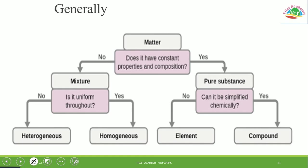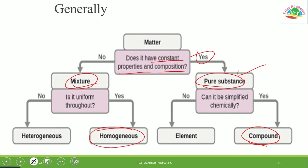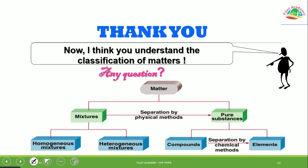In summary: matter can be classified into two broad categories — mixture and pure substance. A pure substance has constant composition; it can be simplified chemically into a compound, and further into an element which cannot be broken down by chemical reaction. A homogeneous mixture is uniform throughout, while a heterogeneous mixture is not uniform in composition. Thank you — see you in the next video. Please leave a comment, like, and subscribe. Bye!